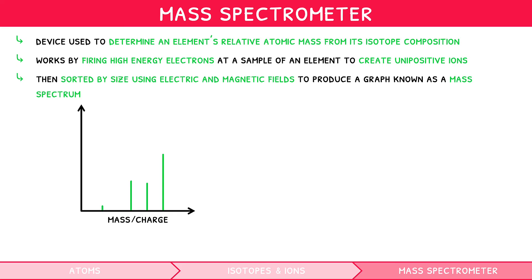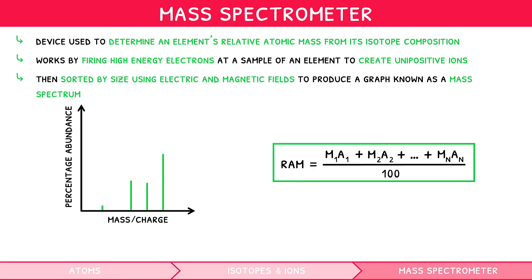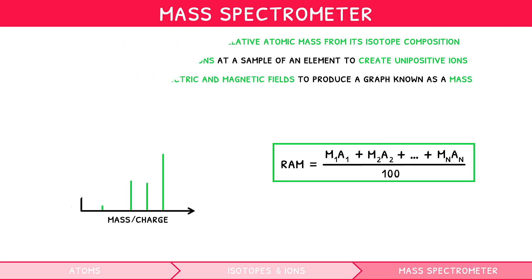Along the y-axis is the percentage abundance of each isotope. The relative atomic mass of an element is calculated by taking the relative atomic mass of the first isotope, multiplying by its percentage abundance, which is then summated with any remaining isotopes in the same way, before being divided by 100. You can therefore get all the information to calculate the relative atomic mass of an element from its mass spectrum.